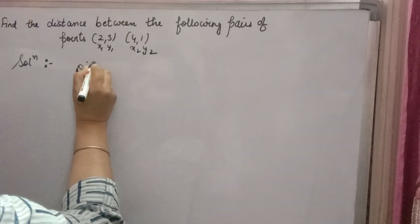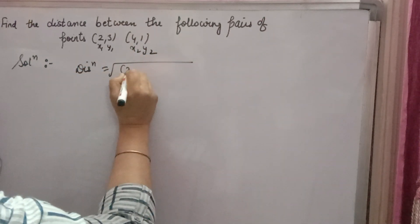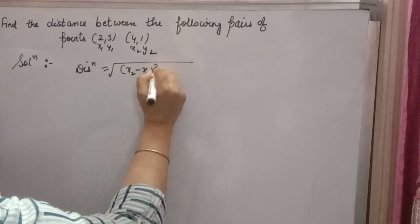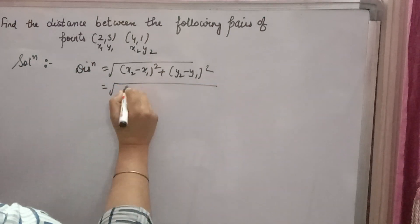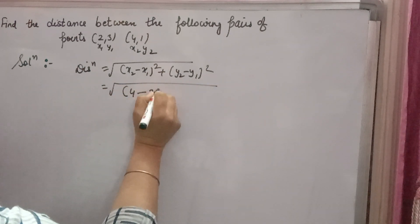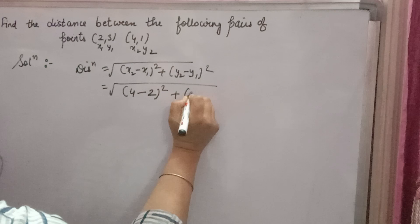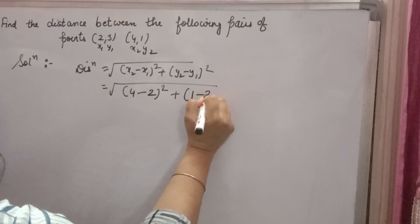We have to find distance. Distance formula is square root of (x2 minus x1) whole square plus (y2 minus y1) whole square. x2 is 4, 4 minus 2 whole square plus y2 is 1 minus y1 is 3.